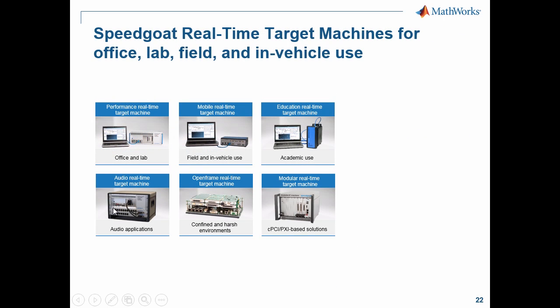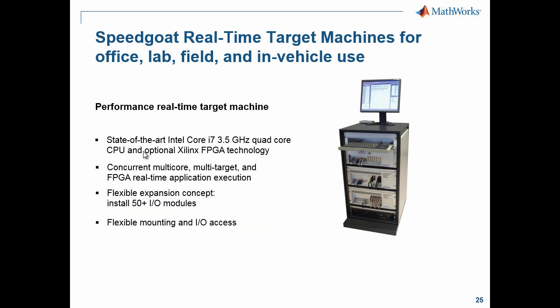There are six different Speedgoat form factors available. The most popular is the 19-inch rack-mount performance machine, but others are more compact and ruggedized for in-vehicle use. The performance real-time target machine uses state-of-the-art technology — an i7 quad-core processor — with support for multi-core, multi-target, and FPGA applications. The machine takes seven IO cards with many channels each, getting you hundreds of channels of IO; with expansion modules you can reach up to 50 IO cards and thousands of channels.